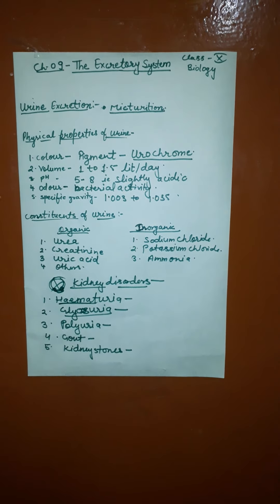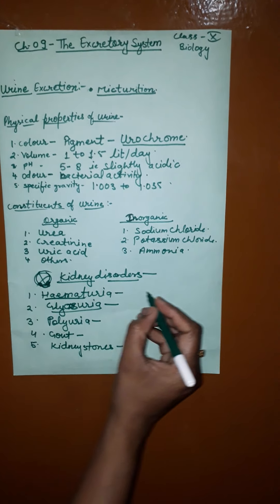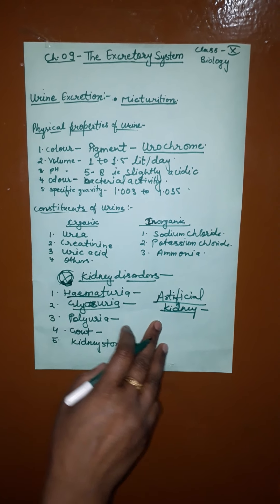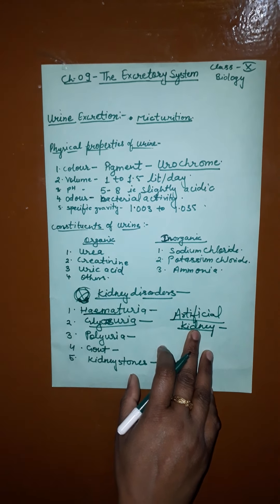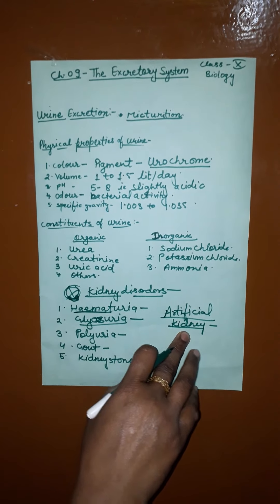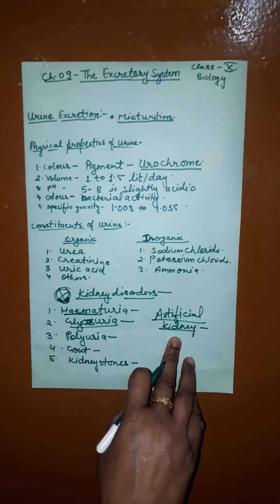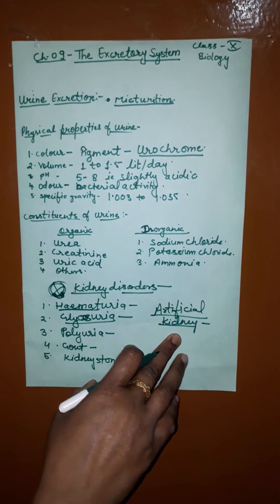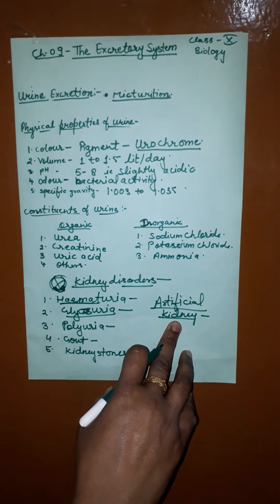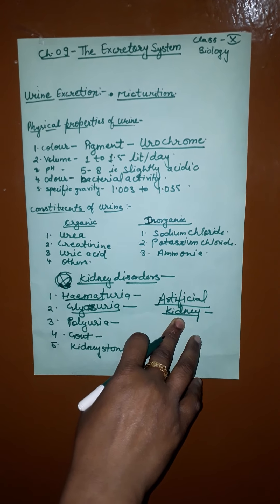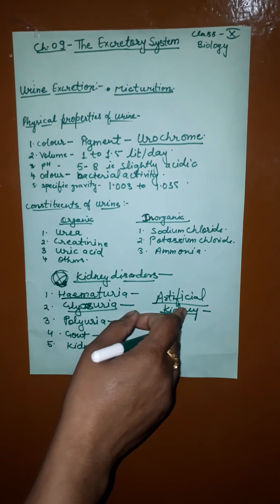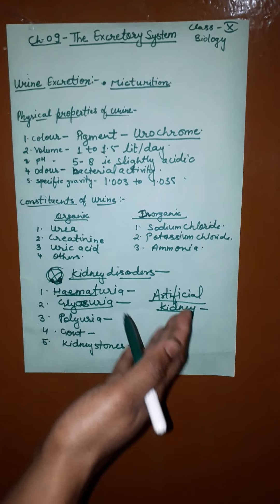Now, the next topic is the artificial kidney. If both kidneys of a person have failed to function, then his blood is filtered using a dialysis machine. The blood from the renal artery is passed through the machine, where urea and excess salts are removed. The filtered blood is then returned to the renal vein. This process is called dialysis, and the machine is also called an artificial kidney.